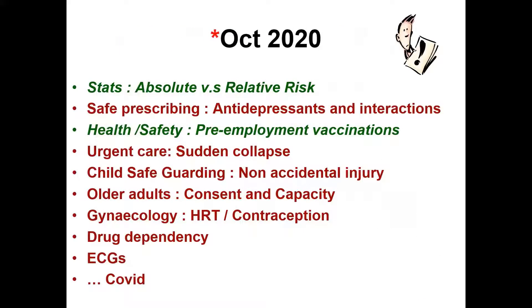How far do we go back? At least two years, ideally. Just for the brevity of this presentation, I'm looking from October 2020 in the lead up to the October 2021 AKT sitting. Statistics has been highlighted as a weak area — specifically that candidates did not understand the central differences between absolute and relative risk and had issues with extracting risk from plots. In terms of admin aspects, health and safety, pre-employment vaccinations has appeared a number of times. And then we have clinical areas such as gynaecology, drug dependency, and other topical areas.